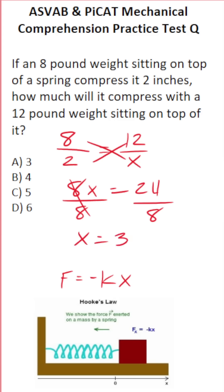24 divided by 8 is 3. In other words, the 12-pound weight will compress the same spring 3 inches.